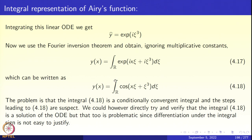If we differentiate 4.18 with respect to x, y'(x) will be integral over ℝ of -sin(x·χ + χ³)·χ dχ, and y''(x) will be -integral over ℝ of cos(x·χ + χ³)·χ² dχ. We pick up factors of χ and χ² in two successive differentiations, so the integrand is not only unbounded but actually diverges, oscillating with large amplitudes χ².